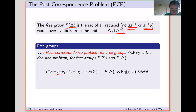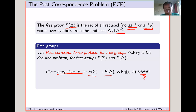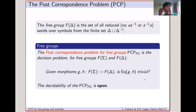The post-correspondence problem for free groups is completely analogous to the free monoid case. Given two group morphisms G and H going from F of sigma to F of delta, we ask the same question: is the equalizer trivial? The only difference is we have group morphisms between groups. However, there is one major difference: the decidability of Post's correspondence problem for free groups is open.